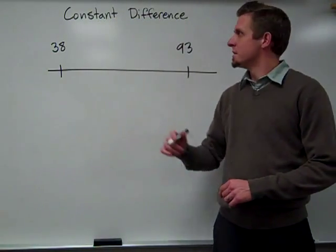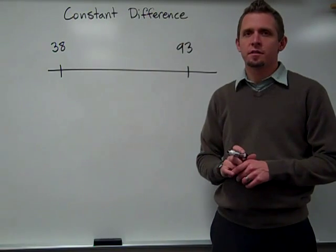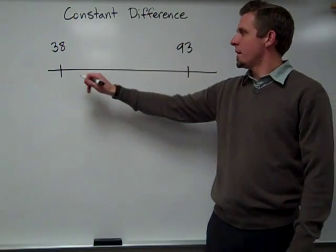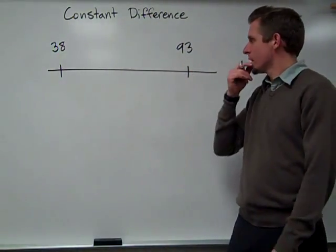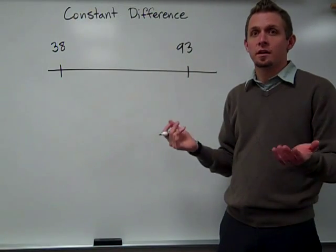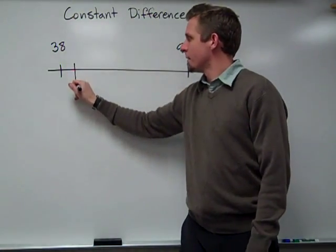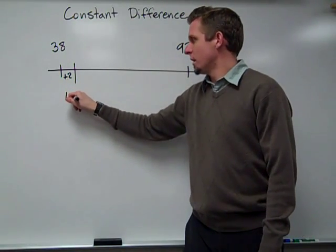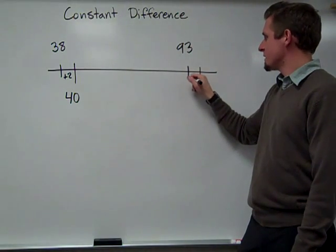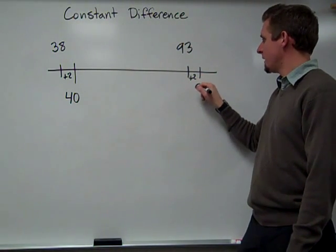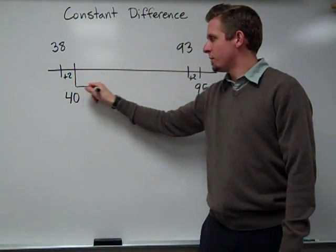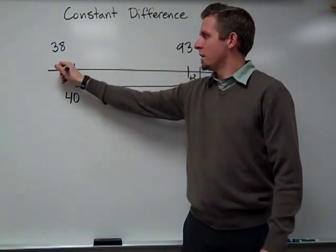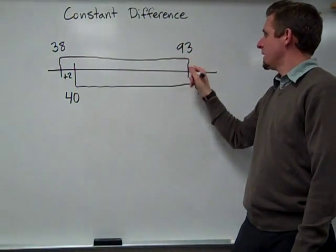This last strategy is subtraction by constant difference, thinking about subtraction as a distance. So I need to find the distance between 38 and 93. Those are kind of messy numbers, so I can actually change the problem a little bit. If I add 2 to 38, that gets me to 40. So I'm going to add 2 on this side as well. That would be 95. So the distance between 40 and 95 is the same distance between 38 and 93.